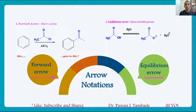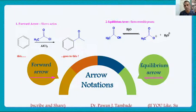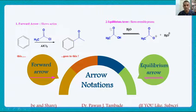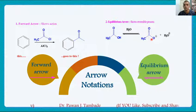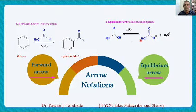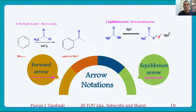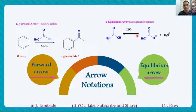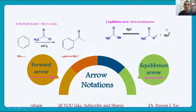The second arrow notation encountered in organic chemistry books is the equilibrium arrow. The equilibrium arrow shows reversible processes. For example, when acetic acid is added to water, it dissociates to form a conjugate base and H₃O⁺ ion. At equilibrium, the concentration of reactant and product remain constant, which is shown by this equilibrium arrow.